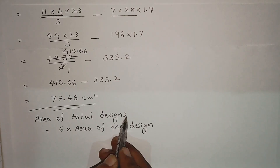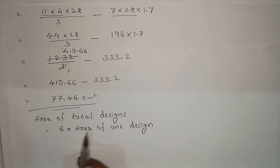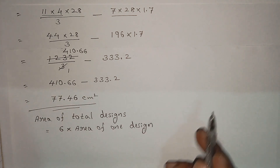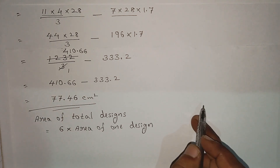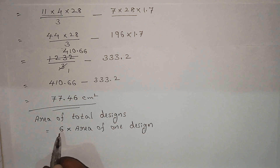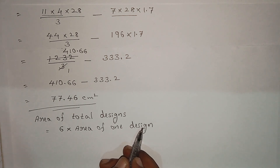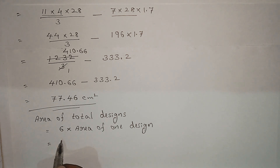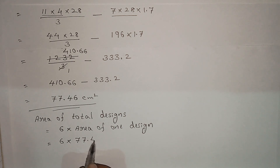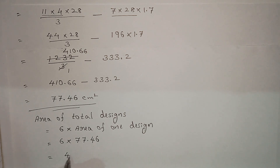Area of total designs equals area of one design multiplied by 6. Since there are 6 equal designs, total area equals 6 × 77.46, which equals 464.76 cm².